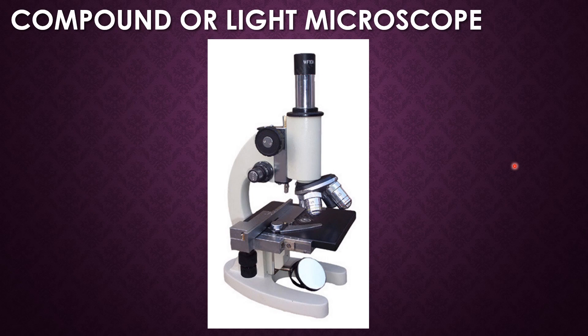This is the advanced form of the simple microscope — this is the compound or light microscope. This kind of compound or light microscope contains eyepieces, two types of adjustments like coarse adjustment and fine adjustment, a nose piece, objective lens, and condenser lens. The compound or light microscope is a slightly upgraded version of the simple microscope.